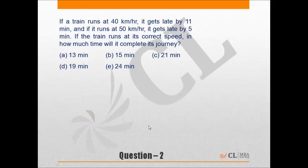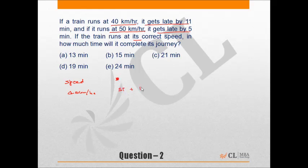Question 2: If a train runs at 40 km/h it is late by 11 minutes, and if it runs at 50 km/h it is late by 5 minutes. If the train runs at the correct speed, how much time will it take to complete the journey? At 40 km/h the time taken is scheduled time plus 11 minutes, and at 50 km/h it is scheduled time plus 5 minutes — so 6 minutes were saved by increasing speed from 40 to 50 km/h.